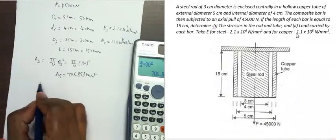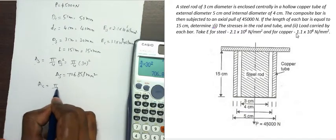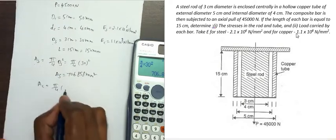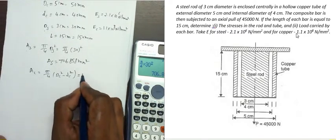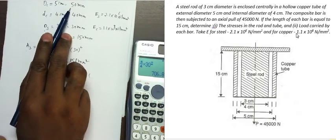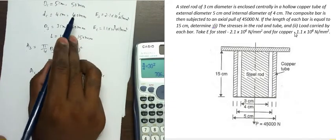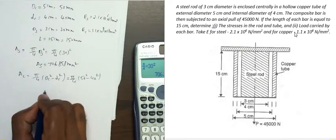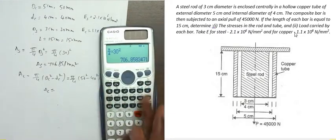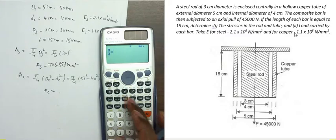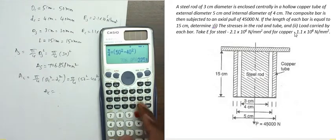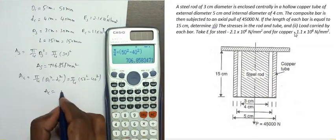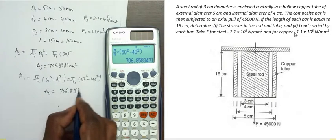Now I am going to find the area of copper, that is AC. AC is equal to π/4 × (DC_outer² − DC_inner²), that is outside diameter squared minus inside diameter squared. That is equal to π/4 × (50² − 40²). The area of copper is equal to 706.858 mm². Both steel and copper have the same cross-sectional area.